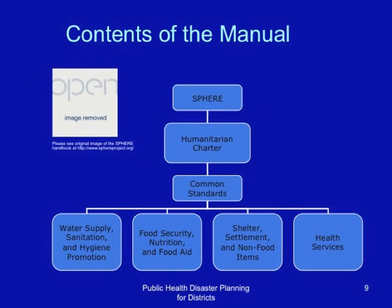These are the contents of the SPHERE manual. It begins with the humanitarian charter, followed by the common standards — that is, standards common to all disasters. In our setting, we've adjusted this to mean standards for response management.